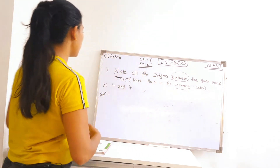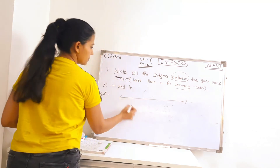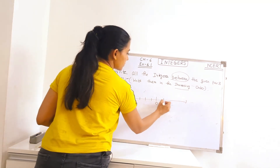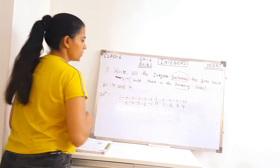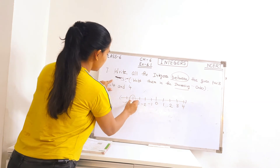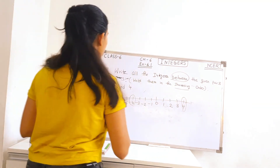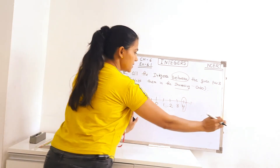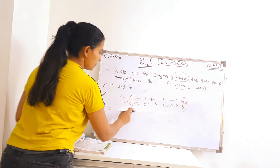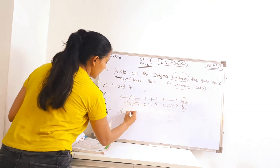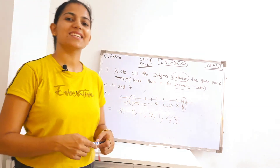Coming to part B. The numbers are: minus 4 and 4. We again need to write the integers between minus 4 and 4. Let's draw a number line with positive and negative numbers. Where is minus 4? It's here, and 4 is here. We need to write the integers between them. Starting from the left going to the right gives increasing order. We do not include minus 4 or 4. Starting from minus 3: minus 3, minus 2, minus 1, 0, 1, 2, and 3.